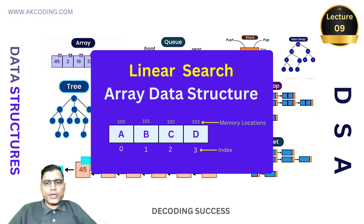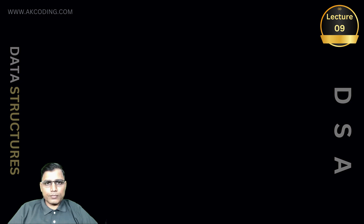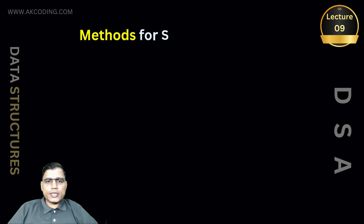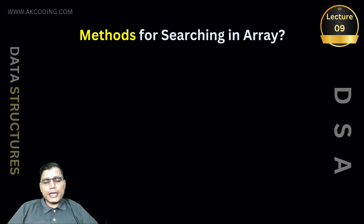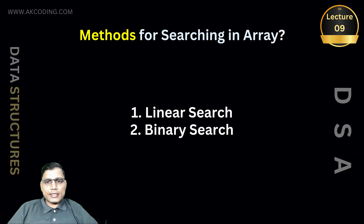At the end of this video you will have a clear understanding of linear search in array data structures. There are two methods for searching in array data structures: number one, linear search, and number two, binary search. Today we will discuss linear search.